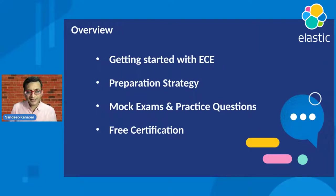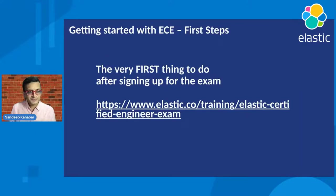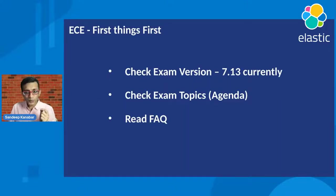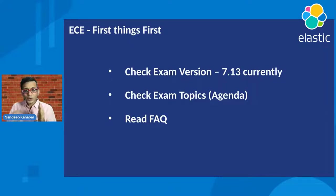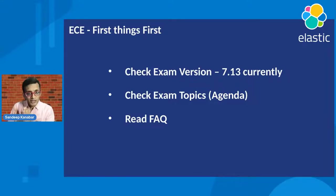Here is the agenda — we'll cover topics like getting started with the Elastic Certified Engineer exam and the preparation strategy. The first thing to do after signing up is to check the exam version. This is very, very important because the exam version can change — usually once a year. Make sure you know what version it is. The current version is 7.13. Also check the exam topics, since all questions come from those topics. And lastly, read the FAQ.